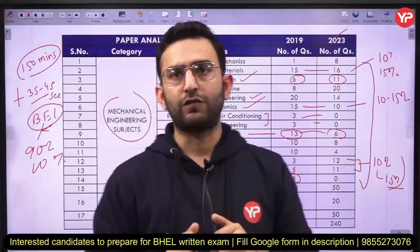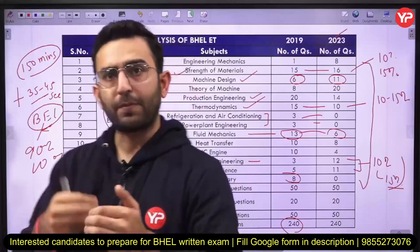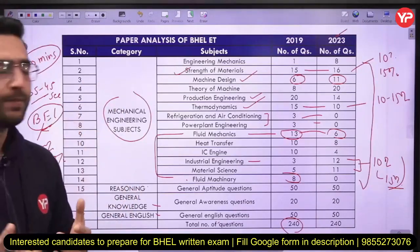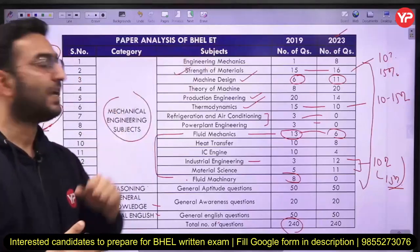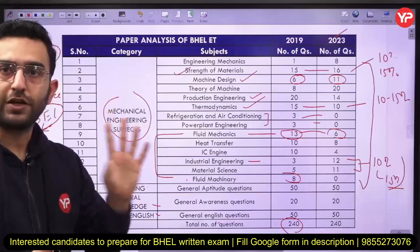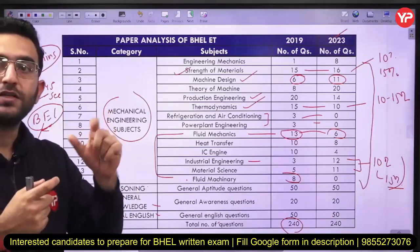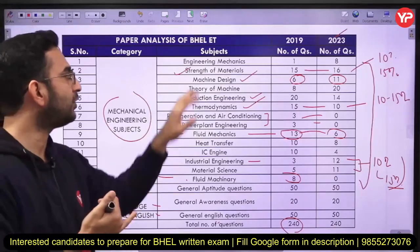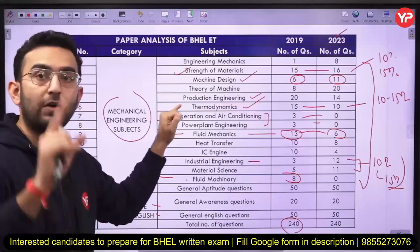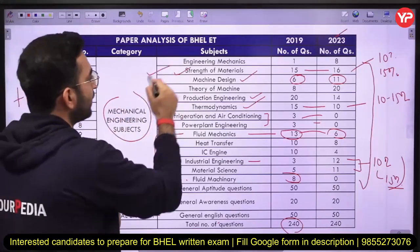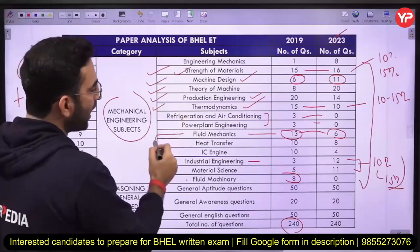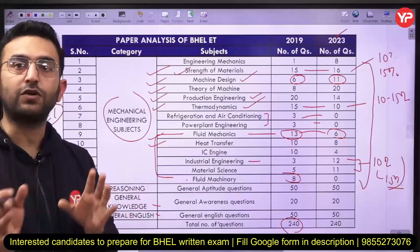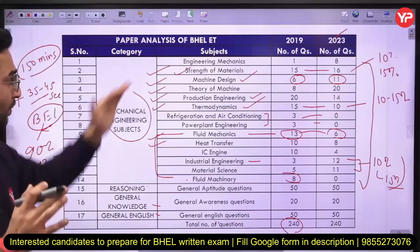The main focus of this video is to provide paper analysis and guide your preparation strategy for both exams. While solving the BHEL paper, choose your subject and questions very carefully, and always focus on subjects with high weightage in previous years. You cannot skip these seven subjects: strength of materials, machine design, theory of machines, production engineering, thermodynamics, fluid mechanics, and heat transfer. These are very important for all PSU exams, your GATE exam, and interviews. Prepare the theoretical portion, understand the concepts clearly, and also solve the numerical portion.